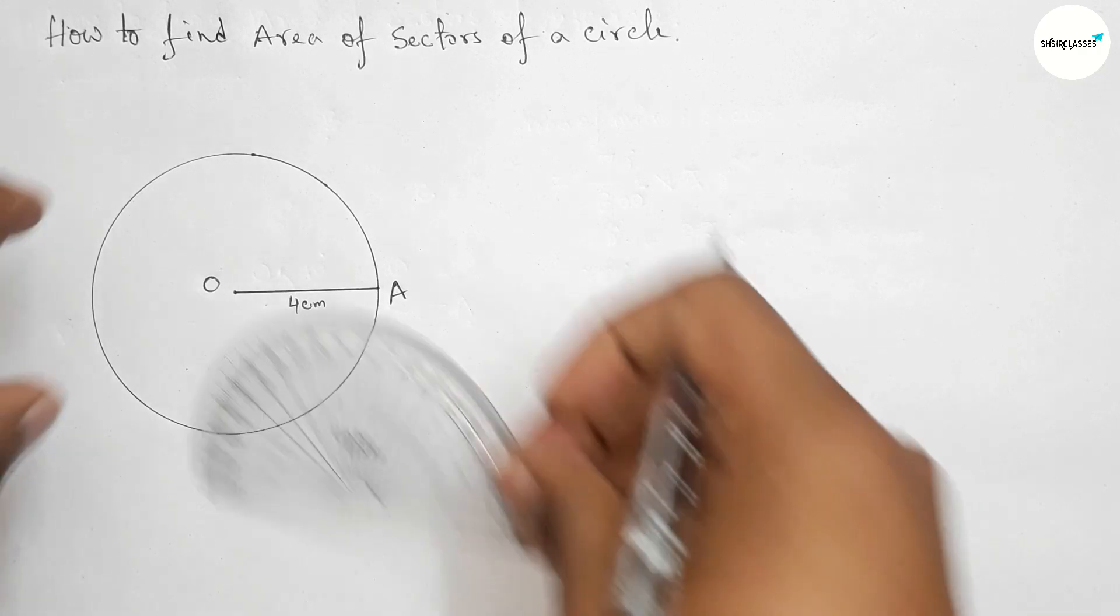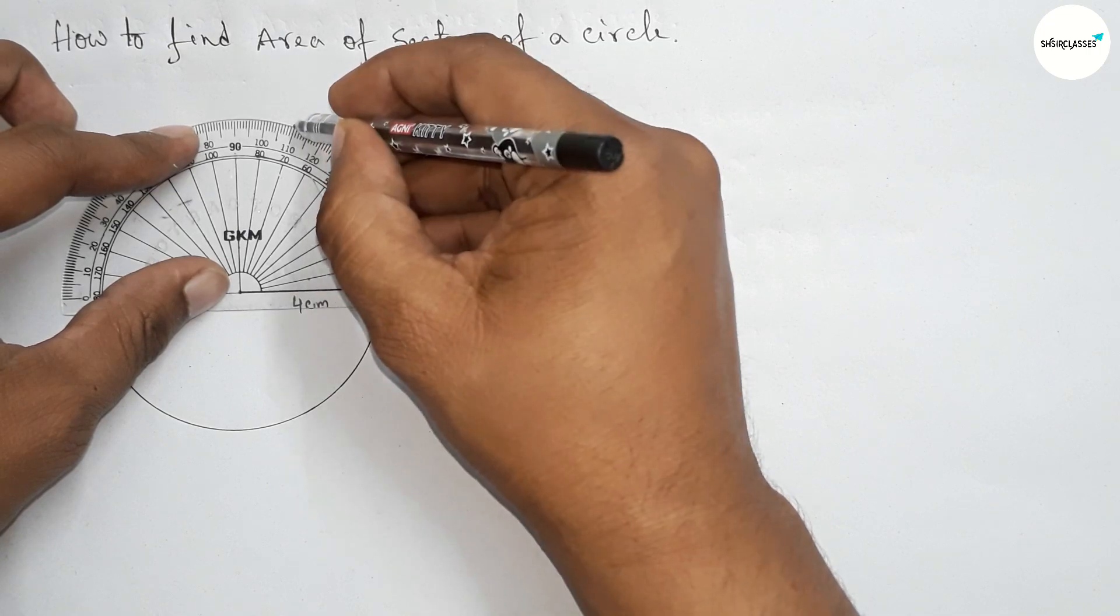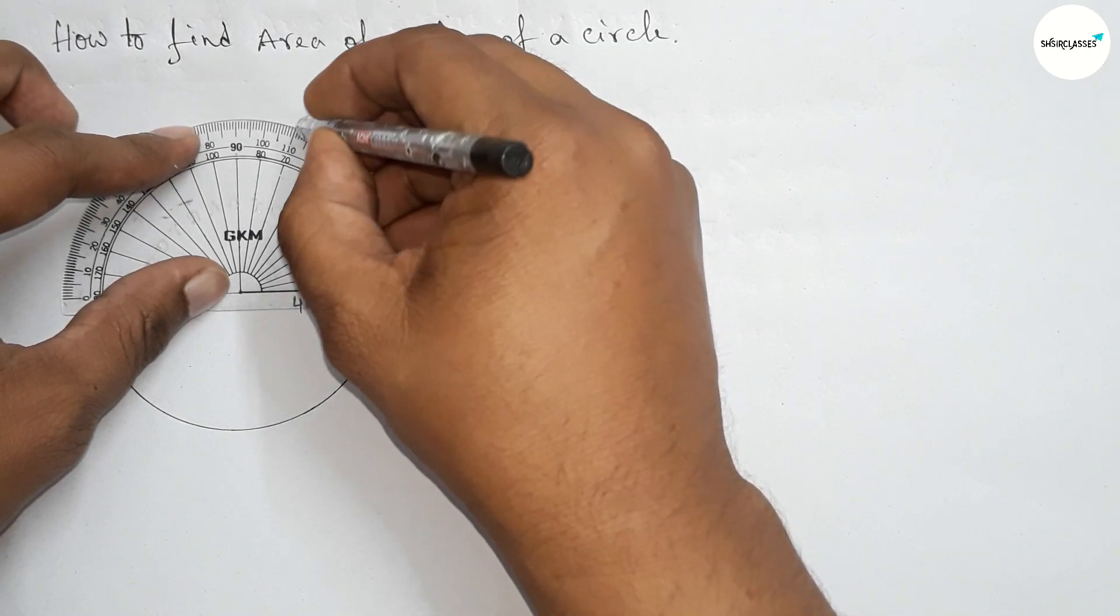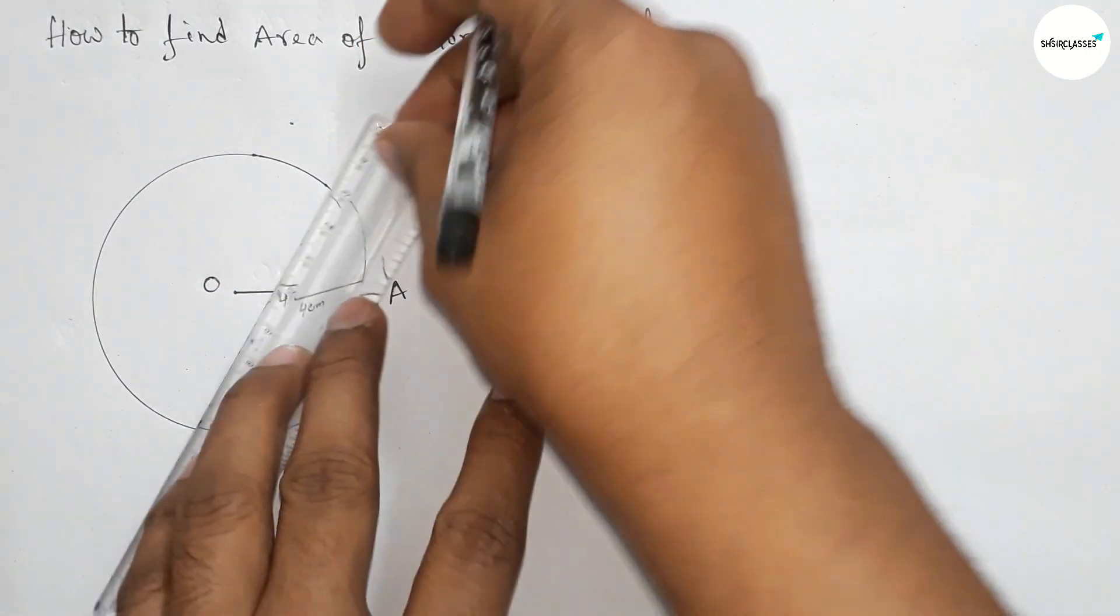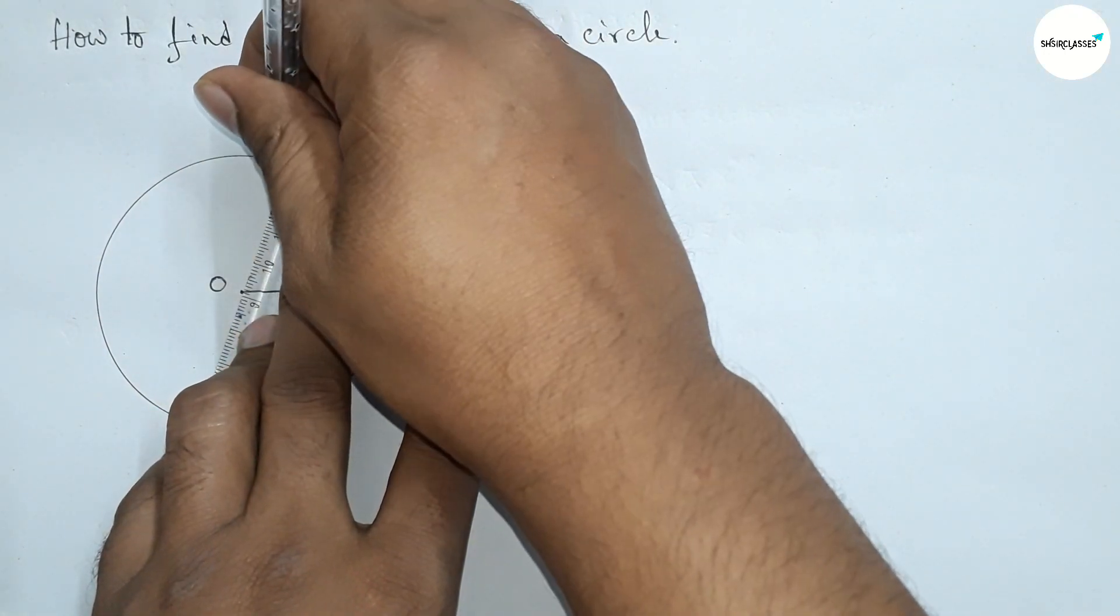Next, draw an angle of 70 degrees on the line OA with the help of a protractor. So this is a 70 degree angle. Now join this line to complete the angle.